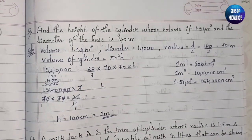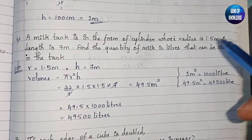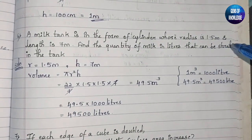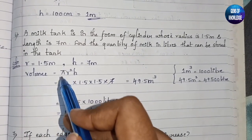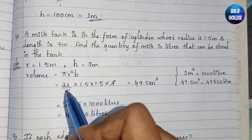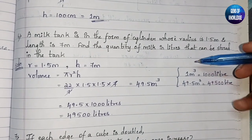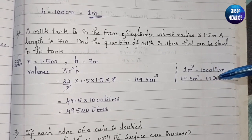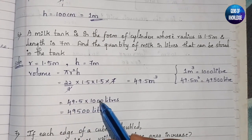Sixth question: a milk tank is a cylinder with radius 1.5 m and length 7 m. Find the quantity of milk in liters it can store. Volume = πr²h = (22/7) × 1.5 × 1.5 × 7. The 7s cancel, giving 22 × 1.5 × 1.5 = 49.5 m³. Since 1 m³ = 1000 liters, the tank holds 49.5 × 1000 = 49,500 liters.